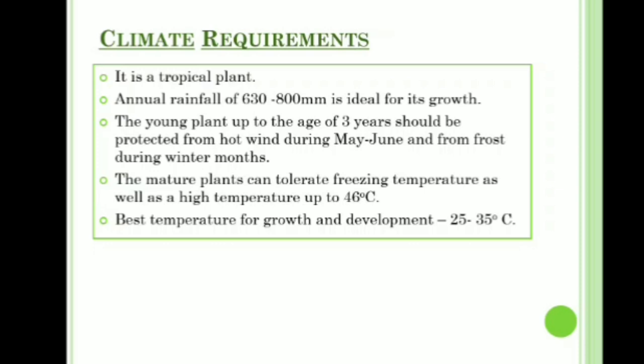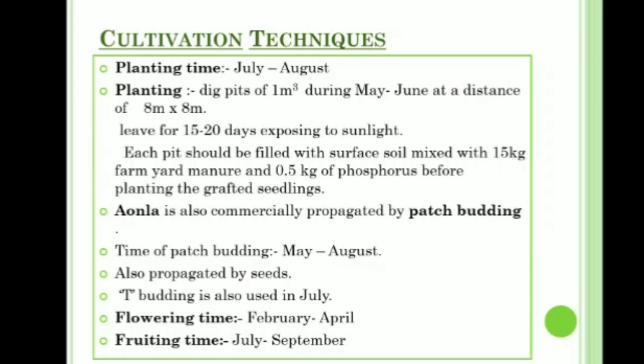Cultivation techniques: planting time of Amla is July to August. Dig pits of one meter cube during May–June at a distance of 8 meters × 8 meters, then leave the pits for 15 to 20 days for sun exposure. Each pit should be filled with surface soil mixed with 15 kg FYM and 0.5 kg of phosphorus before planting. Amla is commercially propagated by patch budding (May to August), also by seeds; T-budding is used in July. Flowering time is February to April and fruiting time is July to September.